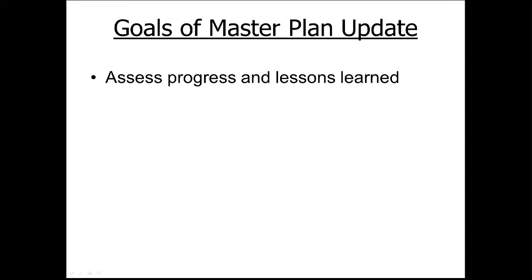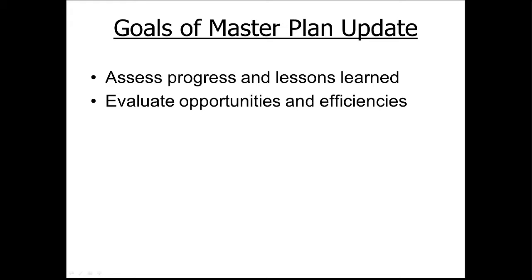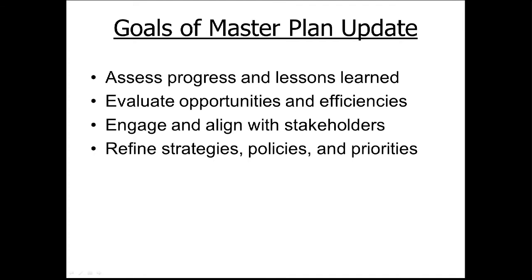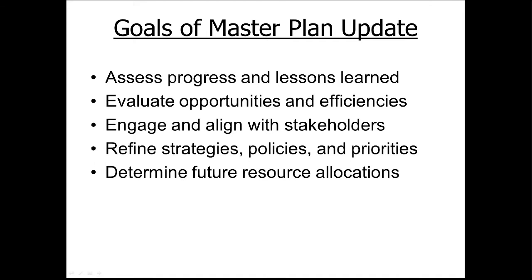The goals of our stormwater master plan update are: we want to look at the progress we've made since 2006 and learn from all the experience and information we've gathered. We want to evaluate our opportunities and efficiencies, be more strategic moving forward into the next 10 years, hear back from stakeholders and the public, and refine our strategies, policies, and priorities based on all the information we receive during the planning efforts. Depending on outcomes, we want to align our future resource allocations to figure out how our program should best spend funding for the City of Fort Worth.